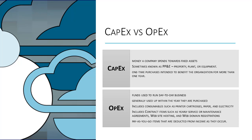Lots of IT hardware, including servers, UPS systems, generators, and the like, can be purchased either as a capital item or as an operating expense item. You can typically pay cash and own the item outright as a capital expense, or you can lease the item or sign a hosting contract with a managed service provider — doing that makes the purchase an operating expense item.